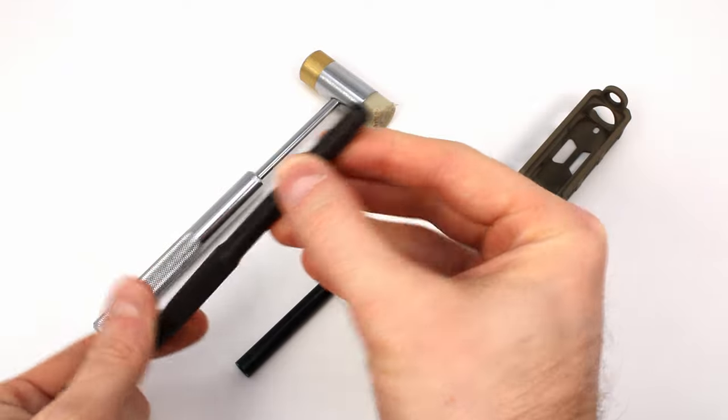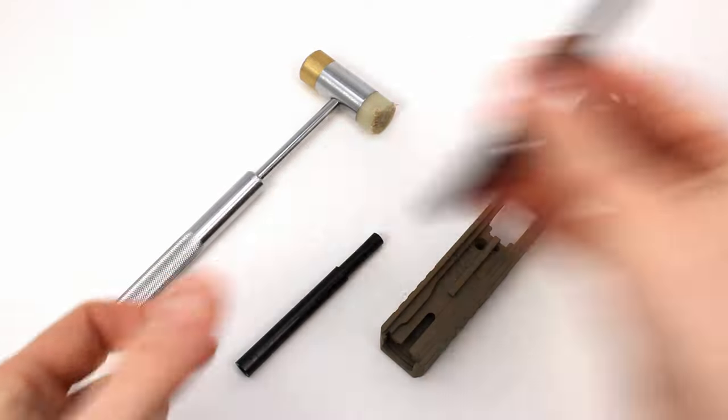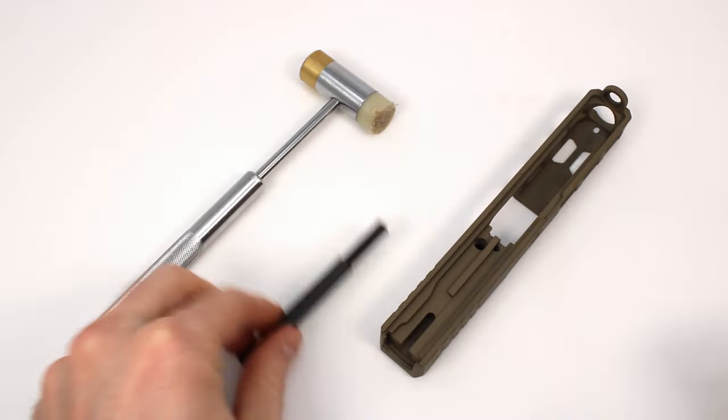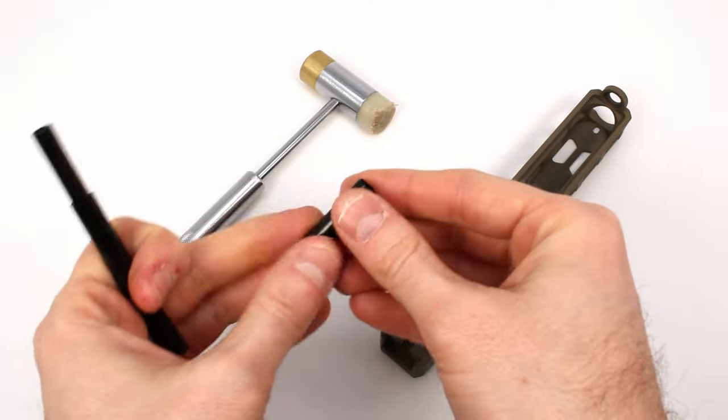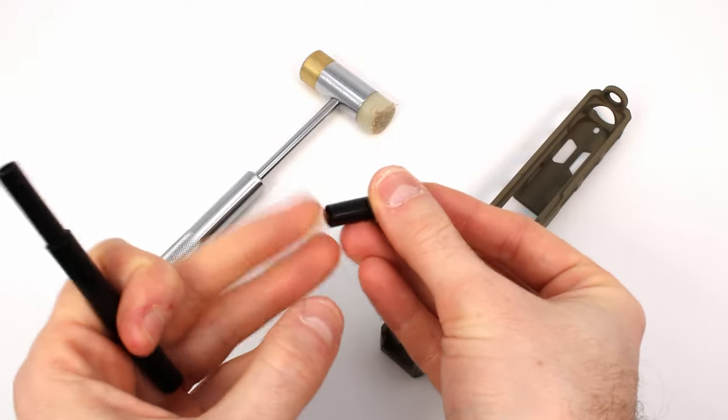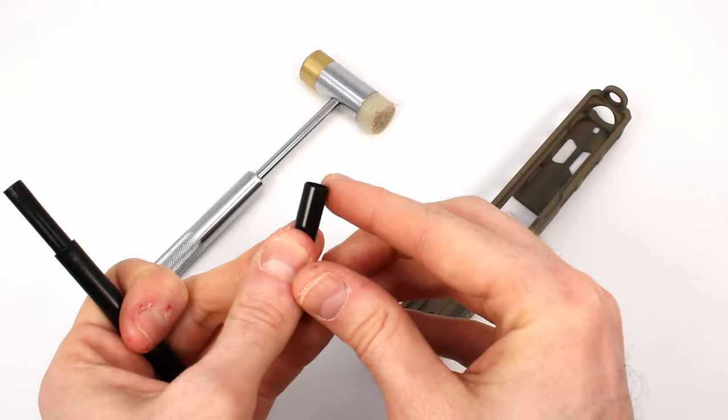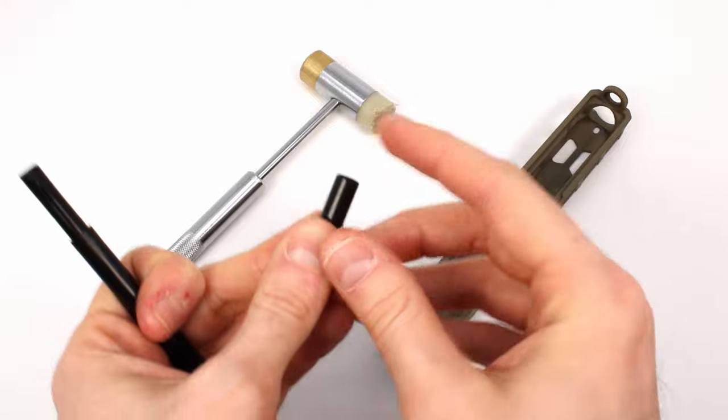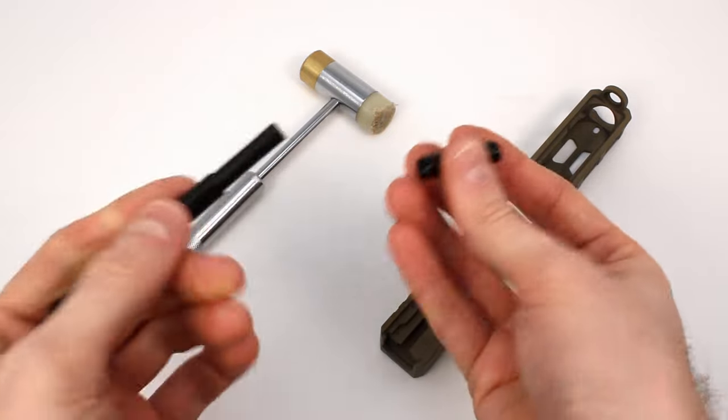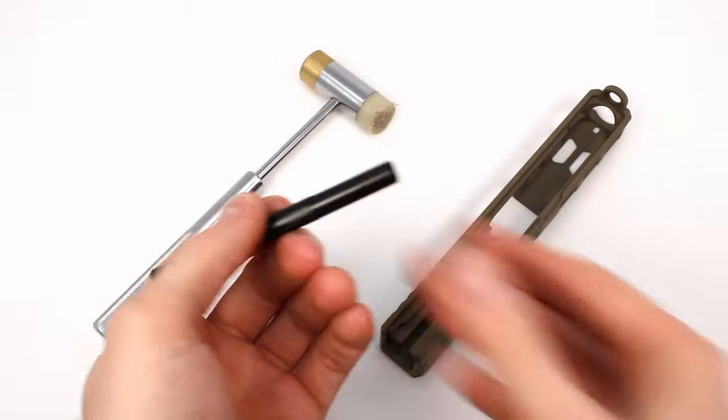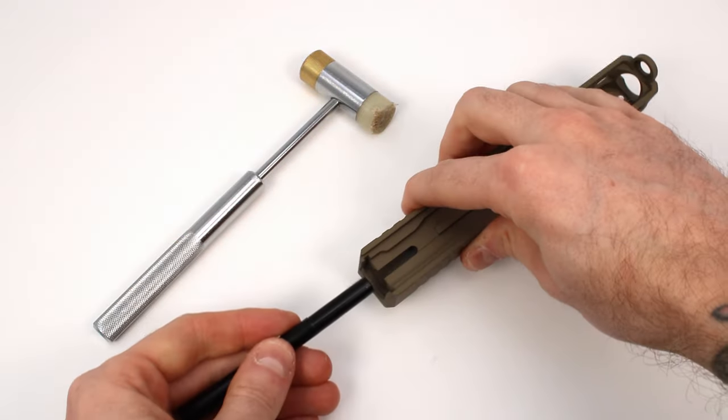Now if you don't have a channel liner install tool, you can also get away with using a hollow punch, one that's 7/32 of an inch in diameter. But we're just going to use the actual tool provided in our kit. Before you hammer it in, it's really important that you inspect the channel liner. One end is kind of flat and one end has sort of a gently beveled end. The gently beveled end is the one that wants to face towards the muzzle. So take the flat end and insert it on the channel liner install tool like so, and then we're just going to line it up here in this hole and we're going to tap it into place.